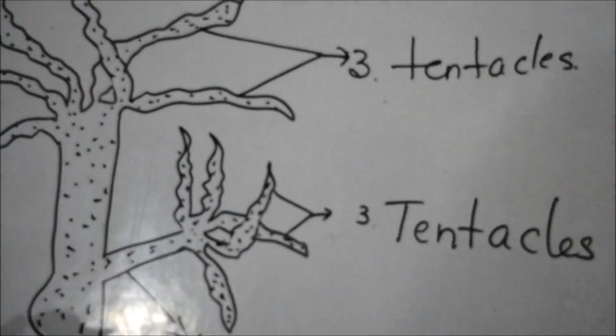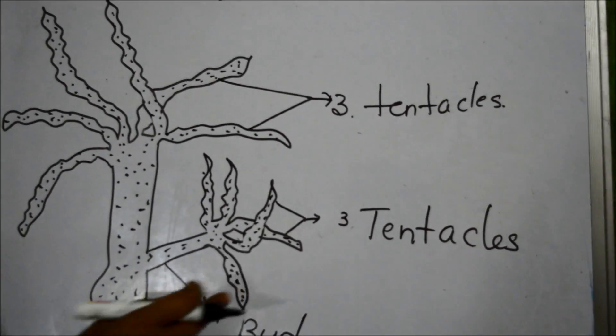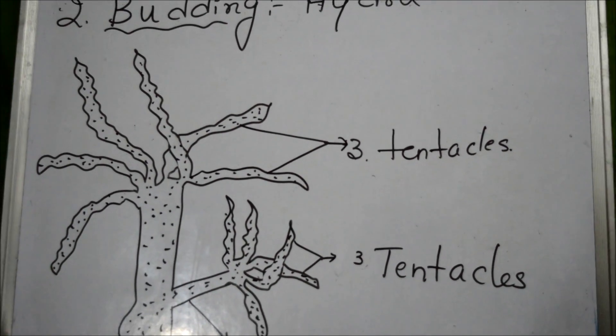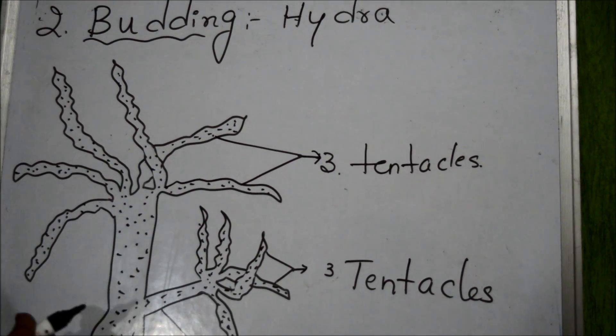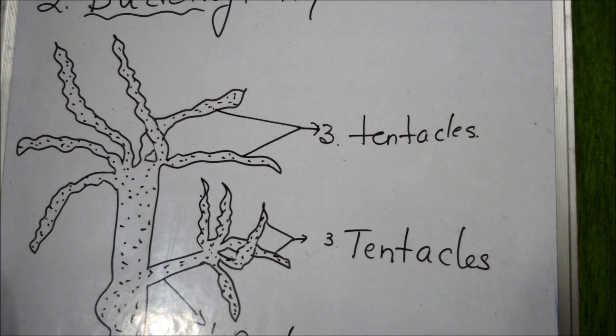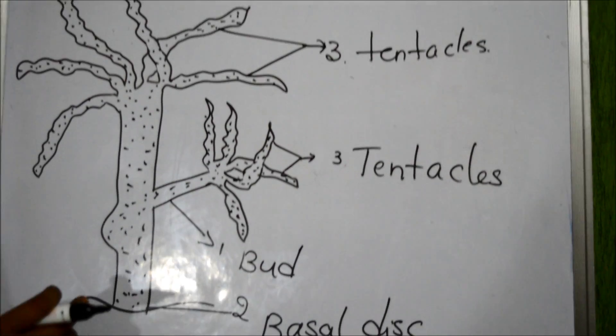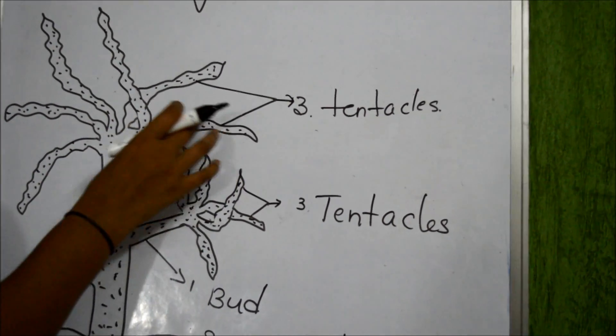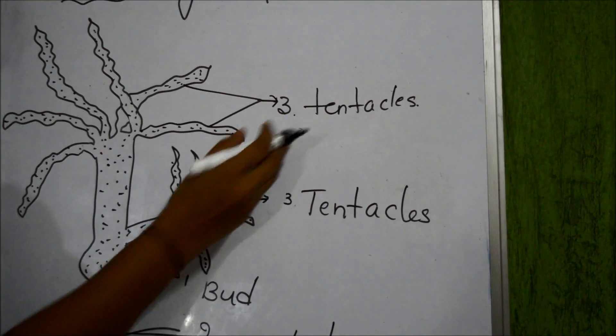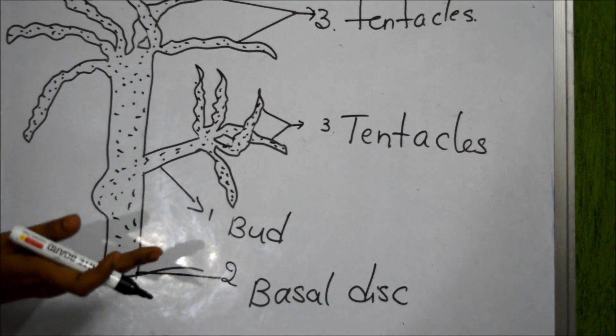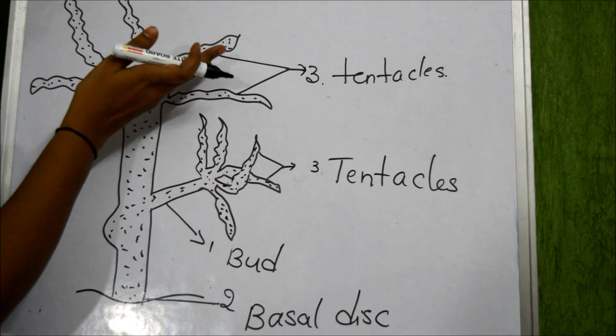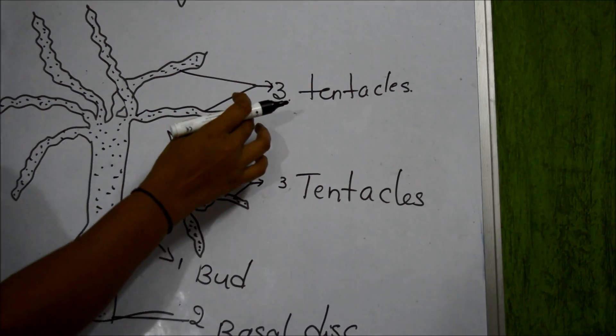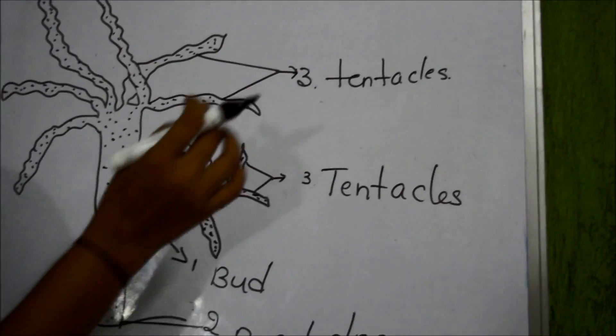Hydra is a multicellular organism which lives in fresh water. The body has a central cavity and it is attached to the base of the plant. At the other end, there is a thread-like structure which may be called as tentacles.